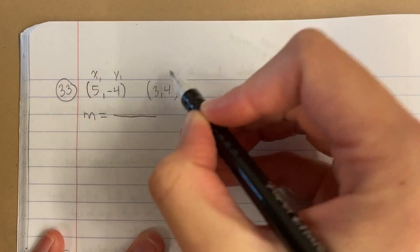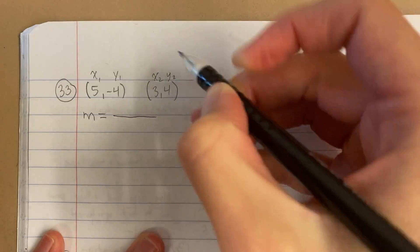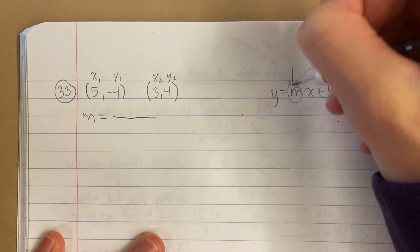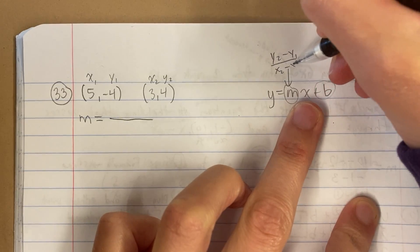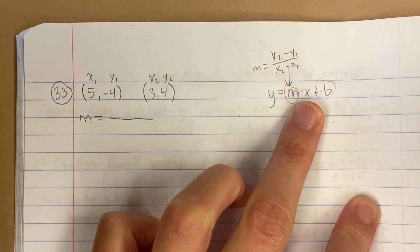So remember what I do: x1, y1, x2, y2. I'm going to use my slope formula because that's what finds me slope, and it's y2 minus y1 over x2 minus x1. That's what m equals, that's what slope equals.